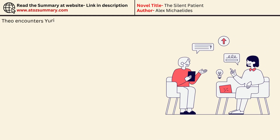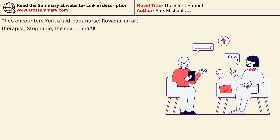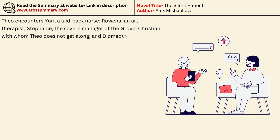Theo encounters Yuri, a laid-back nurse; Rowena, an art therapist; Stephanie, the severe manager of the Grove; Christian, with whom Theo does not get along; and Diomedes, who oversees the psychiatry section.